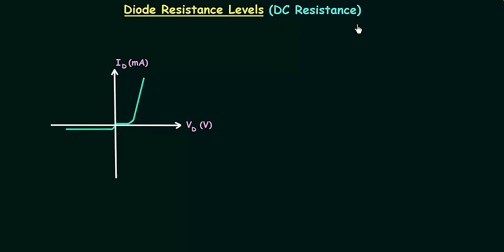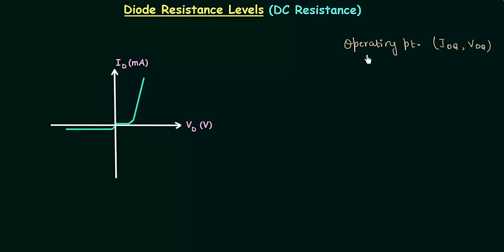In this lecture we will learn DC resistance of PN junction diode. As the operating point of the diode moves, the resistance of the diode will also change. The operating point consists of IDQ and VDQ coordinates, and if you change the operating point it means you are changing the current through the diode or voltage across the diode or both. When you change them, the resistance will also change because resistance is equal to V by I.